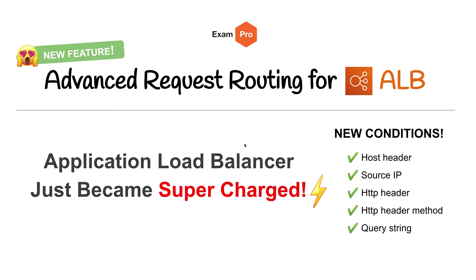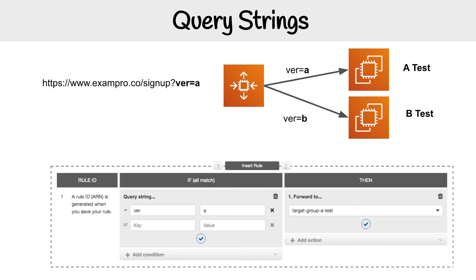I want to show you three examples of things that you might want to try out with this new advanced request routing. Let's look at our first example, which is query strings.